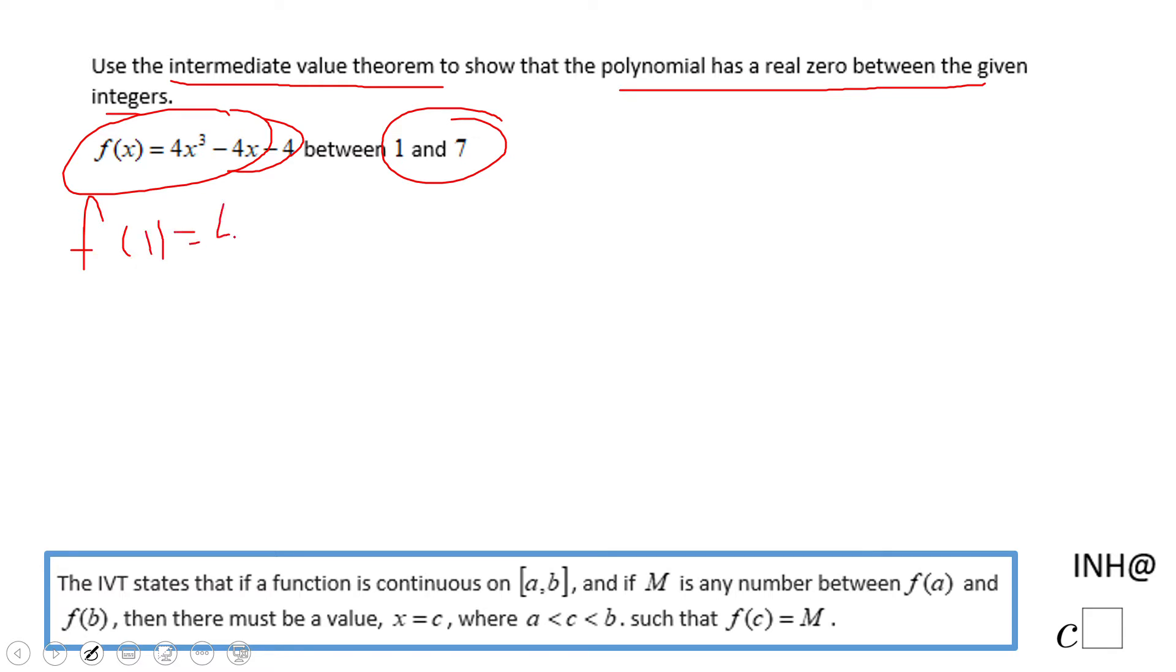f(1) is going to be 4 times 1³ minus 4 times 1 minus 4. 1³ is 1, so we get 4 minus 4 minus 4, which equals negative 4.